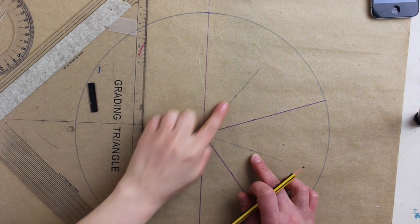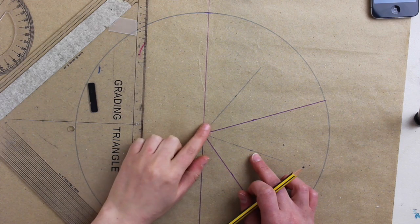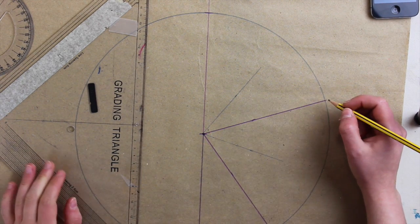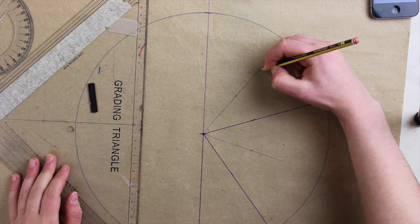So how long those lines are going to be will determine how big each point of your star will be. So I'm going to leave that up to you.